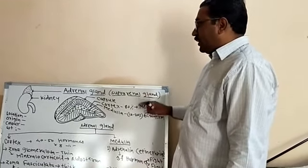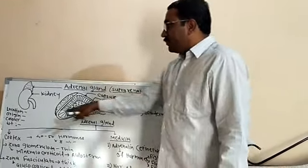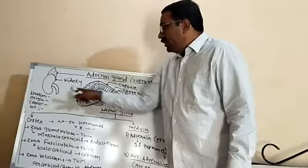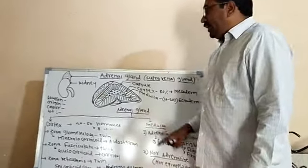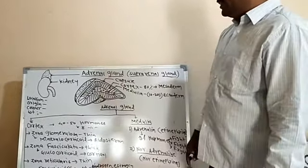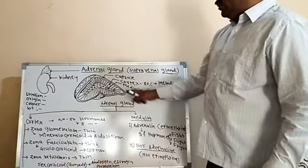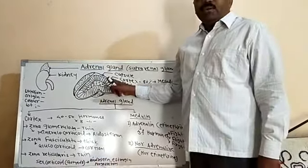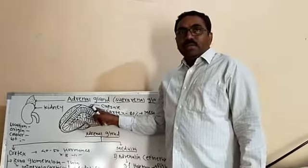This gland is mixed in origin because it is a compound gland. The cortex originates from mesoderm and the medulla originates from ectoderm, making it a mesoectodermal or ecto-mesodermal gland.